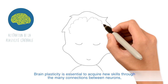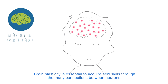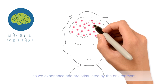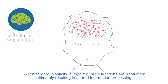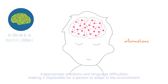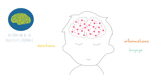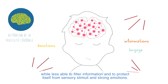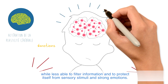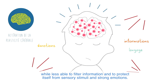Brain plasticity is essential to acquire new skills through the many connections between neurons, as we experience and are stimulated by the environment. When cerebral plasticity is impaired, brain functions are restricted, ultimately resulting in altered information processing, inappropriate emotions, and language difficulties, making it impossible for a person to adapt to the environment. Simultaneously, the brain becomes more excitable while less able to filter information and to protect itself from sensory stimuli and strong emotions.